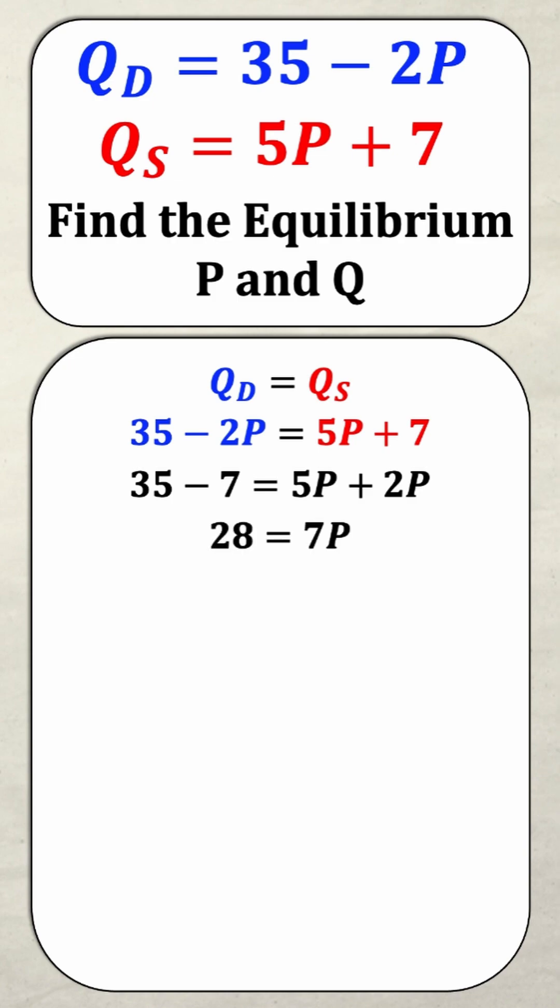And finally, simplifying, I get 28 equals 7P and dividing both sides by 7, I get P equals 4. And this means my equilibrium price is 4.